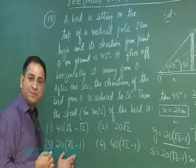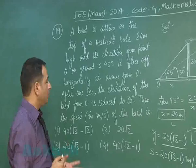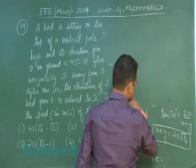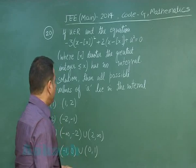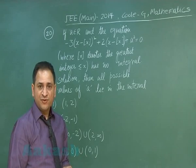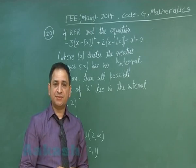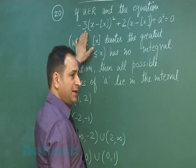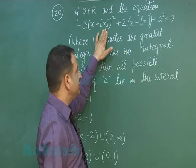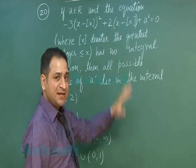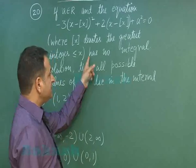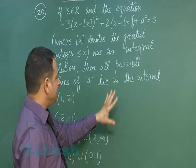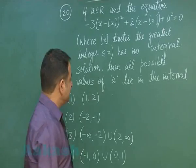The correct answer is option number 3. Now moving to problem number 20, which is a trickier problem involving a quadratic equation as well as calculus. It is given that if a belongs to ℝ and the equation minus 3(x minus ⌊x⌋)² plus 2(x minus ⌊x⌋) plus a² equals 0 has no integral solution, then all possible values of a lie in which interval?